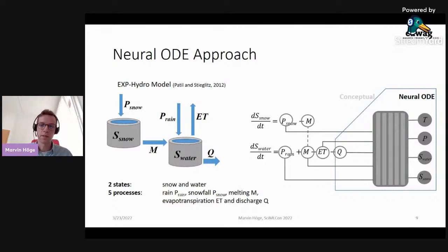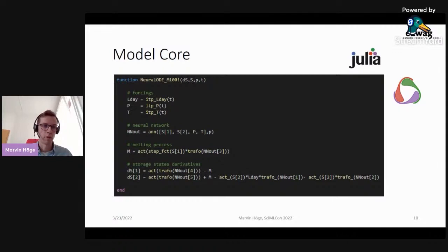And this is what the model core in Julia looks like. First, we interpolate the external variables to make them time continuous. This is also not typical with machine learning methods in hydrology, because the other shown approaches operate on discrete time steps.